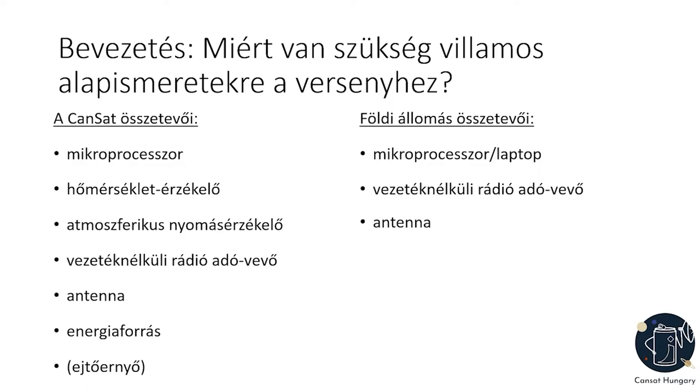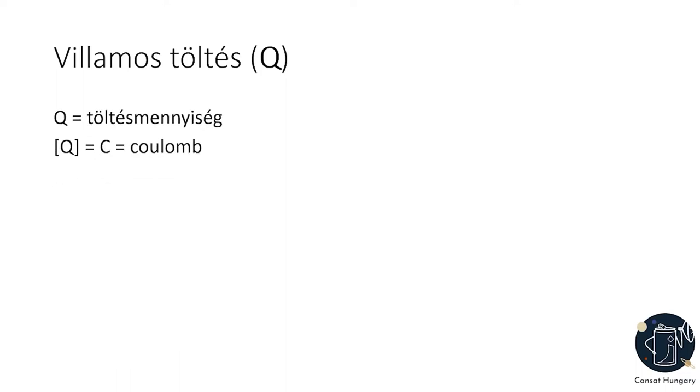Ahhoz, hogy megértsétek, hogy hogyan működnek ezek a komponensek, alapvető elektronikai ismeretekre van szükség. Az anyag egyik alapvető tulajdonsága a villamostöltés. Ezt egy előjeles skalármennyiséggel jellemezzük, amit Q-val jelölünk, és a mértékegységét nagy C-vel jelöljük és coulombnak mondjuk.